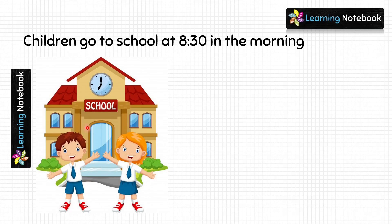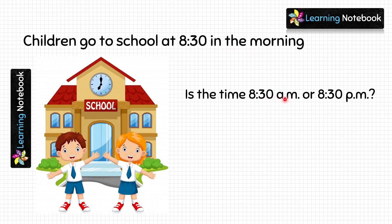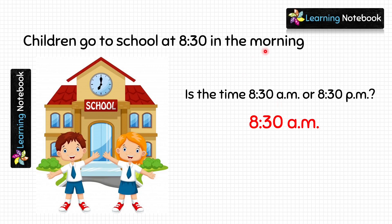Next question: children go to school at 8.30 in the morning. This time is AM or PM? It is 8.30 AM because it is in the morning and it is after 12 midnight but before noon. So it is 8.30 AM.